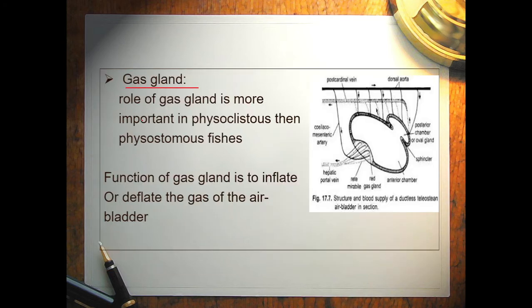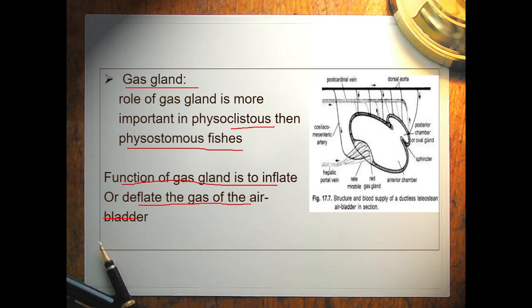The gas gland plays a more important role in physoclistous fishes than in physostomes fishes. The function of the gas gland is to inflate or deflate the gas of the air bladder.